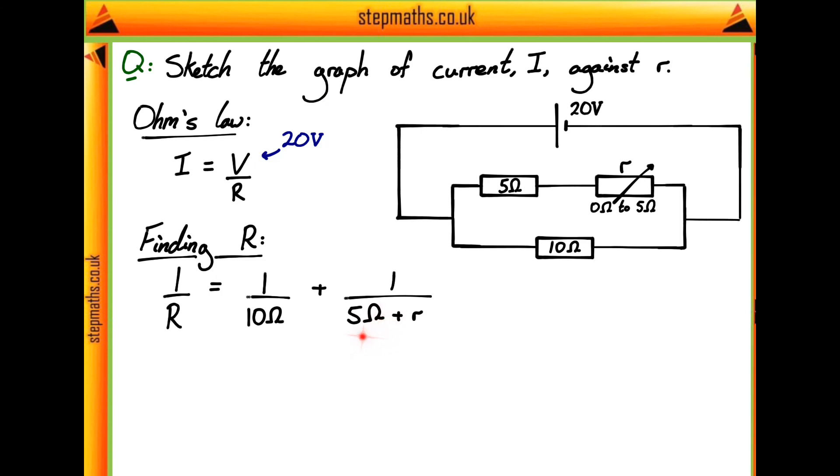What we can then do is simplify this expression. If we multiply each by the denominator of the other, then this becomes 5 plus R over 10, and this becomes 10 over 5 plus R, of course added together. We can then simplify to get a total R value of 10 multiplied by 5 plus R, over 15 plus R.